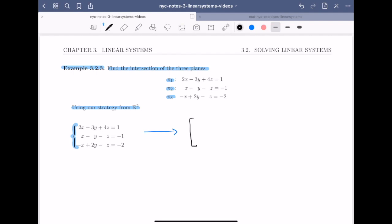Remember all we have to do is write down the coefficients and the constants. Reading from the first equation, the coefficient of x is 2, the coefficient of y is minus 3, the coefficient of z is 4, and the constant on the right hand side is 1. We do the same for the second equation giving coefficients 1, minus 1, and minus 1, with constant minus 1. For the third equation we have coefficients minus 1, 2, minus 1, and minus 2.